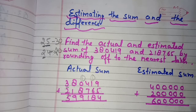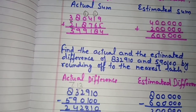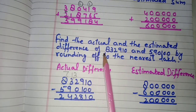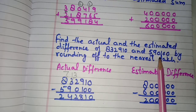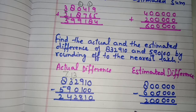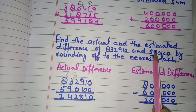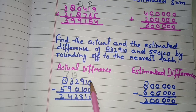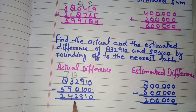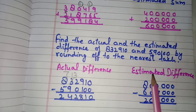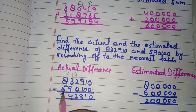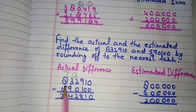Now we will do one question related to estimated difference. Find the actual and the estimated difference of 8,32,910 and 5,90,100 by rounding off to the nearest lakh. We apply the same rule — first we find the actual difference, writing the greater number on top and the smaller number at the bottom, subtracting them. The actual difference is 2,42,810. Now we need to find the estimated difference by rounding to the lakhs place.